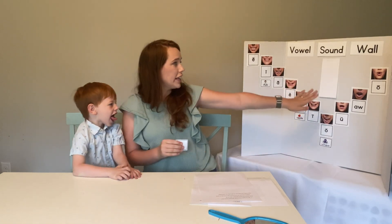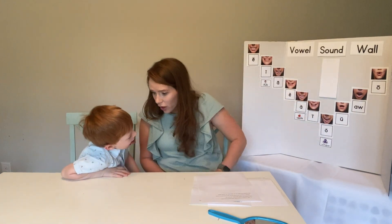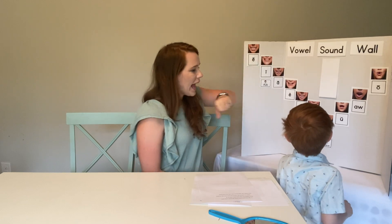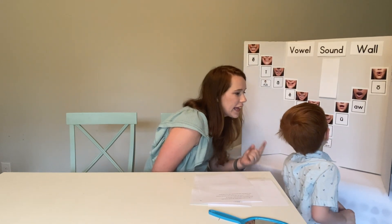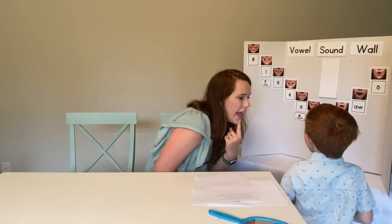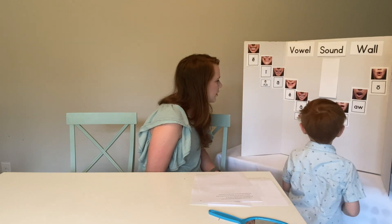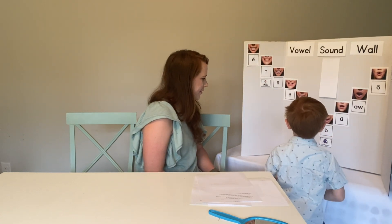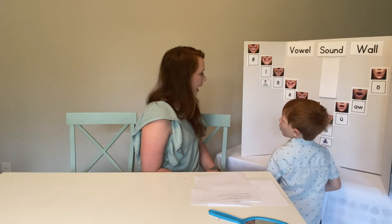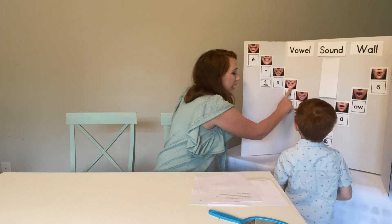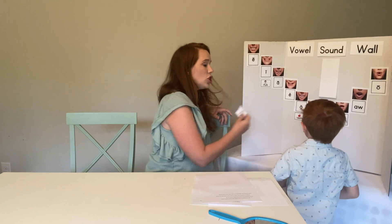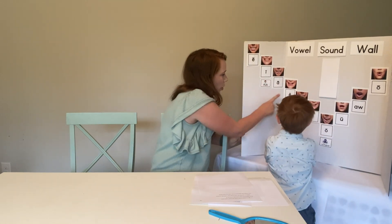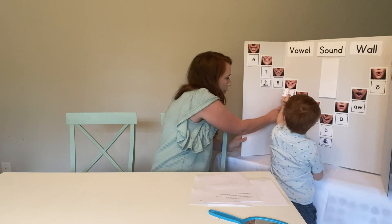We're going to look over here at our vowel sound wall. Can you help me look over here and find the picture that's saying eh? Which one do you think might be saying eh? The teacher guides the student to where to place the grapheme photo card. Right here is saying eh. Can you put the eh picture underneath the mouth picture that's showing eh? Put it right here.